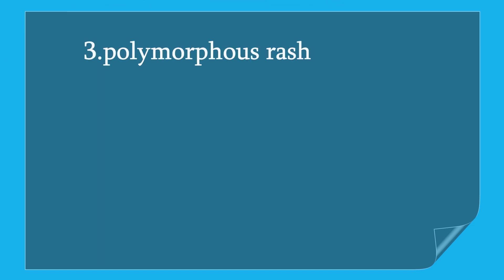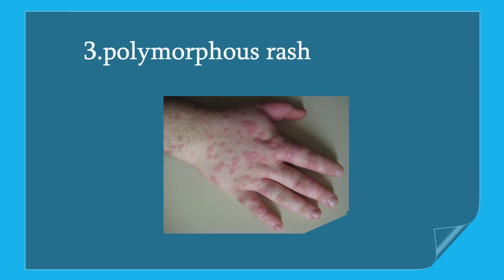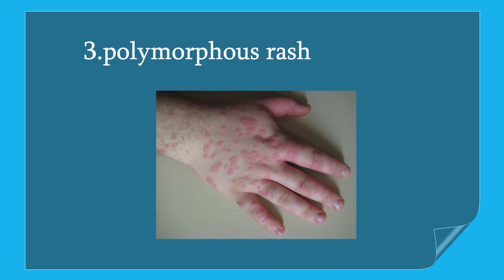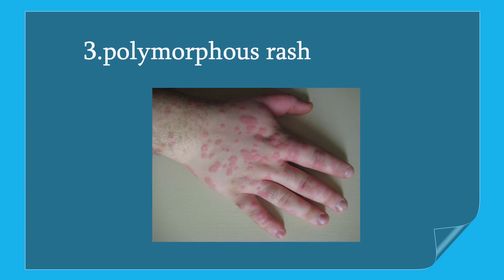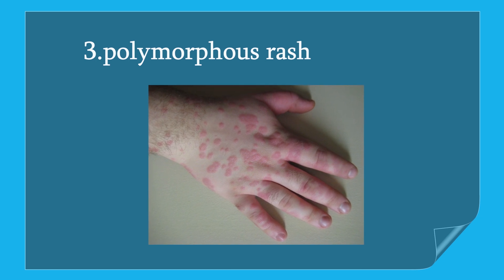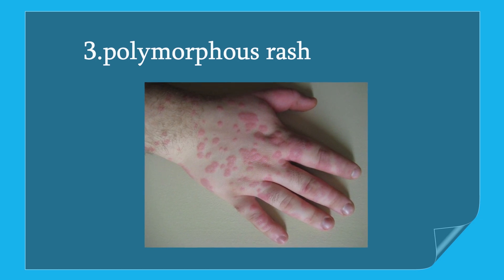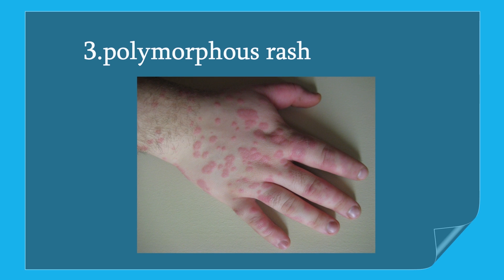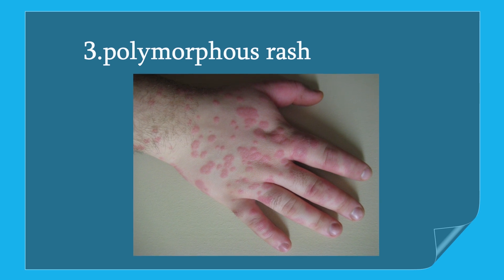Polymorphous rash. Rash usually appears as red tiny bumps, and they are also raised as patches of skin. Polymorphous rash means rash occurring in different forms.